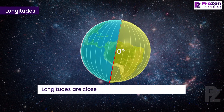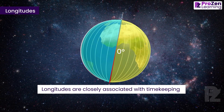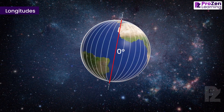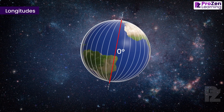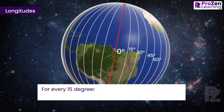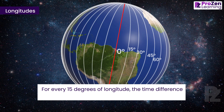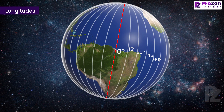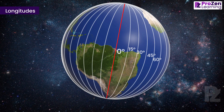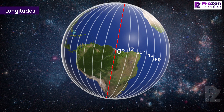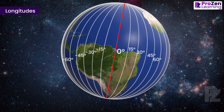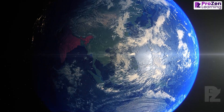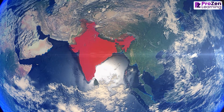Longitudes are closely associated with timekeeping. As the Earth rotates from west to east, the time at different longitudes changes. For every 15 degrees of longitude, the time difference is approximately one hour. So when it is noon at the Prime Meridian, places 15 degrees east will be one hour ahead, and places 15 degrees west will be one hour behind.